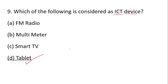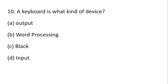Next question: Keyboard is what kind of device? Keyboard is a computer input device — it inputs data into the computer. Output device gives results. Microsoft Word is word processing. Keyboard is an input device.